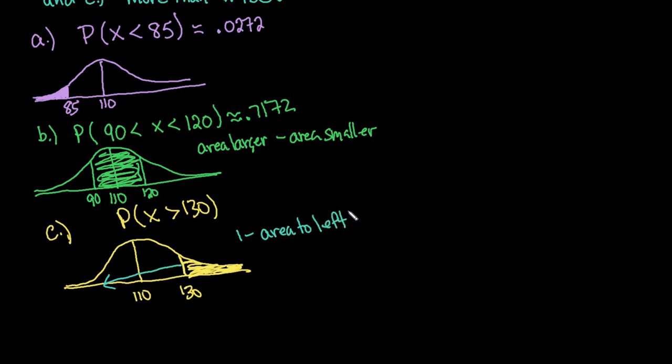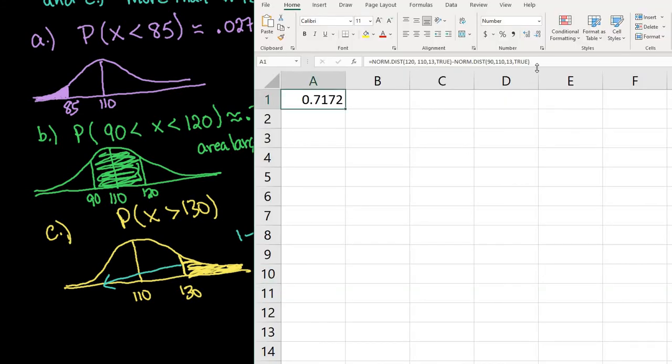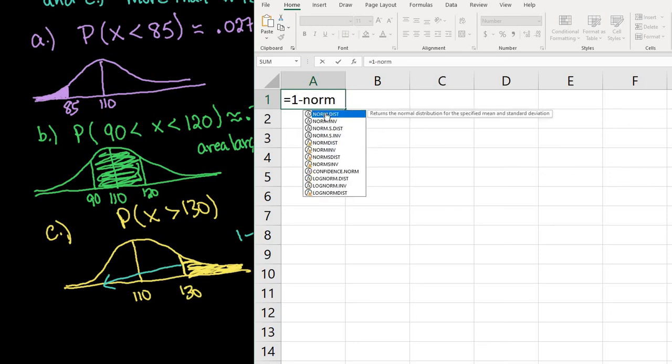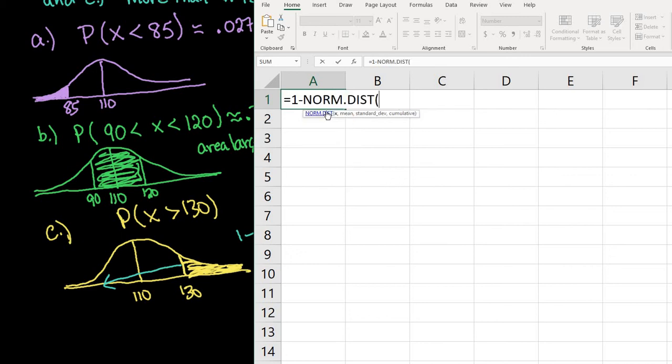I'll retype the formula, so I'll clear the cell and start over. We'll do equals one minus NORM.DIST. X in this case is 130.